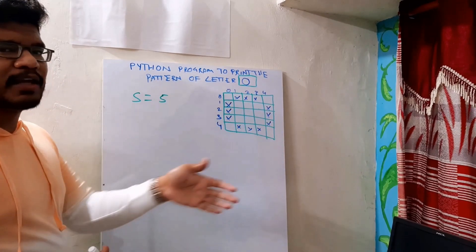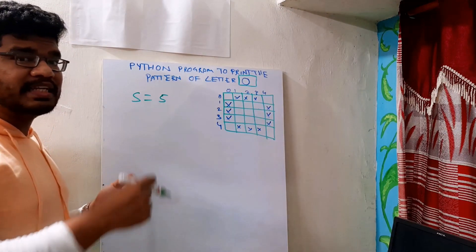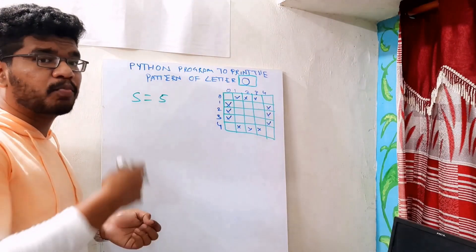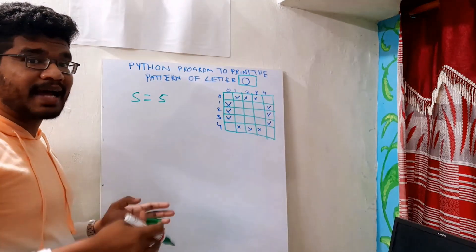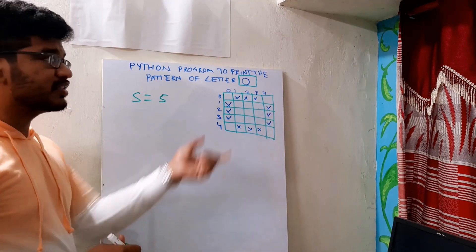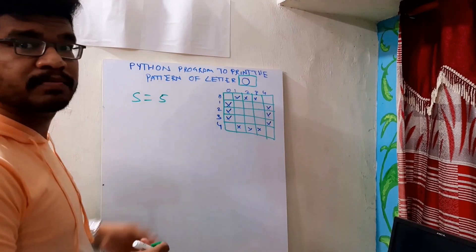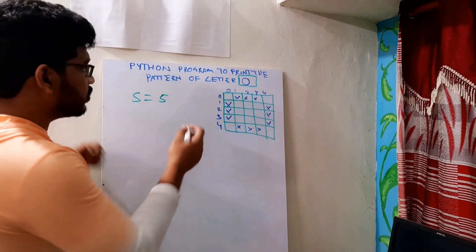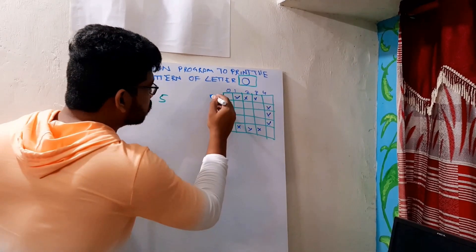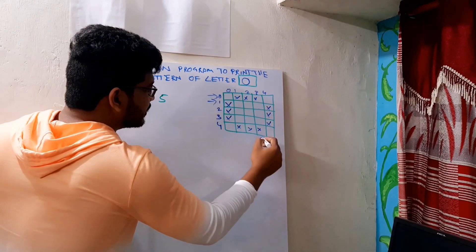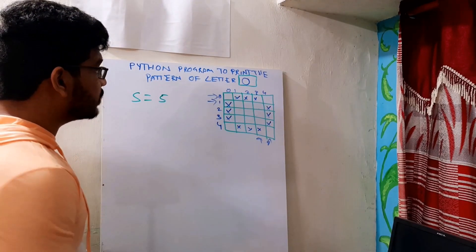In a few moments I will go to the IDE where I code this program. There I will prompt the user to enter the size, and based upon that size, the size of the letter may vary. Here I am taking it statically as 5. As you know, these are called rows and these are called columns, so first I will loop through these rows and columns.